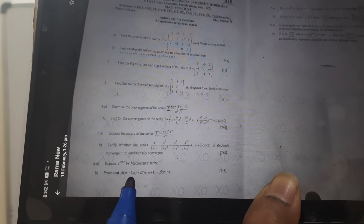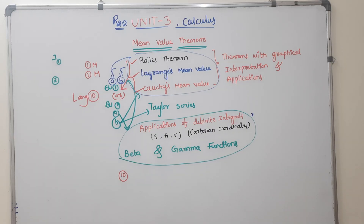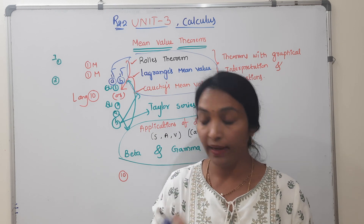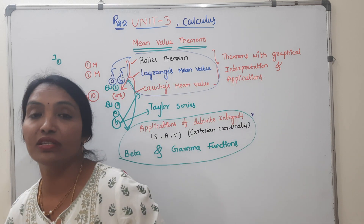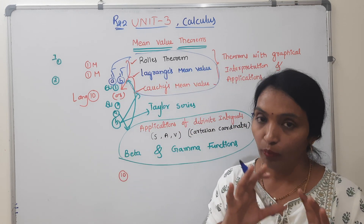Here we have a question: expand e to the power of sin x by McLaurin series — it should be Taylor's. Prove that beta(m, n+1) plus beta(m, n+1) equals beta(m, n). We have multiple questions here. If you have individual papers and questions, the answer for one question is more than enough.